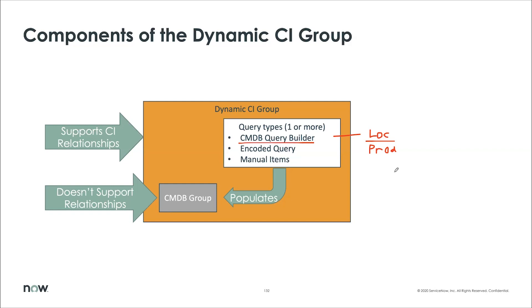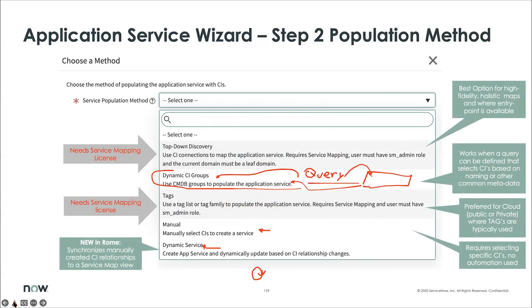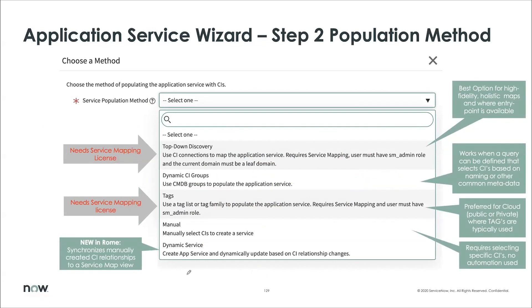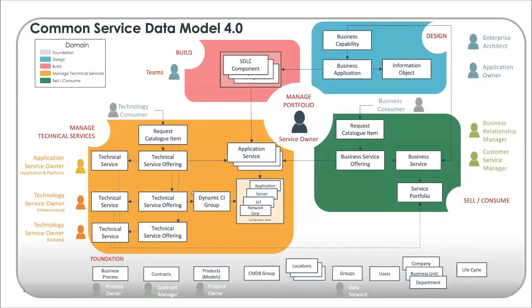You can change the 10,000 limit, but I would say you're doing something wrong if you actually need to. You can use location or product model as a way of breaking it down. The intent was not to have one giant group. Dynamic CI groups can be two different types: one where they become an application service themselves, or they can be used logically for connecting to something like a technical service offering. When you're creating the app service you can use it as an app service, and then coming back you can use it as part of the technical service definition.